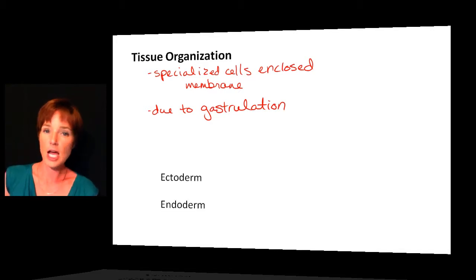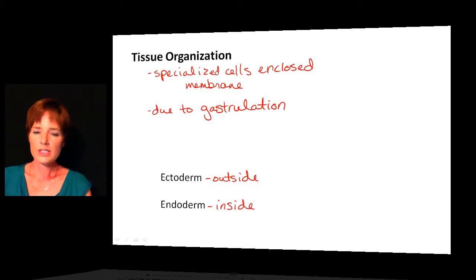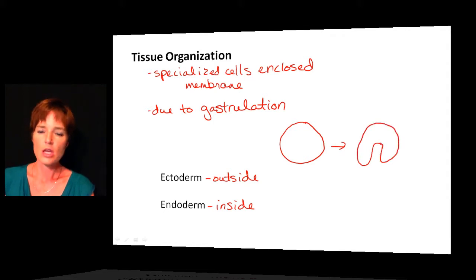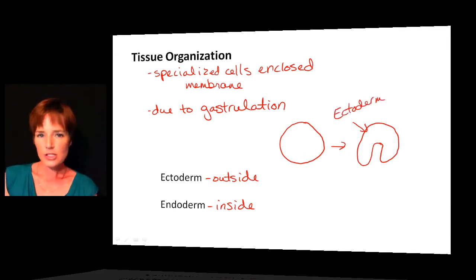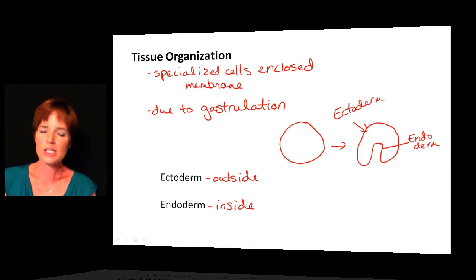Gastrulation gives us a couple of different layers of tissues: ectoderm — ecto means outside — and endoderm — endo means inside. We start with a hollow cell mass called the blastula, and then through infolding it ends up folding in. The outside is where you would have the ectoderm, which is characteristically responsible for the development of the body wall — the outside of the organism. The inside is the endoderm, which tends to develop into the digestive tract.